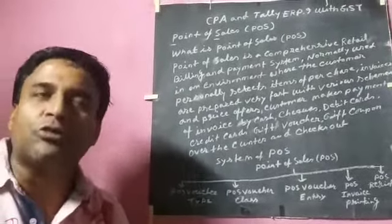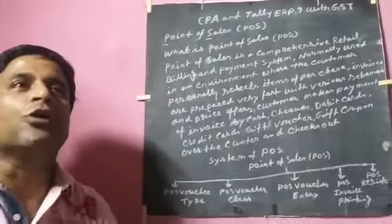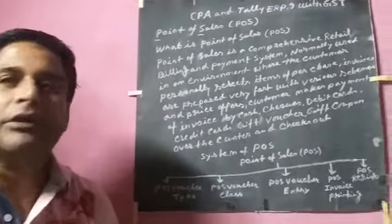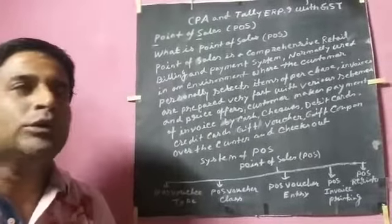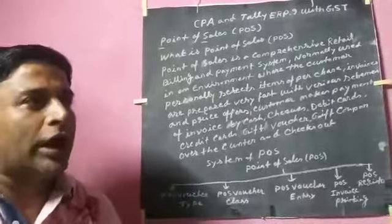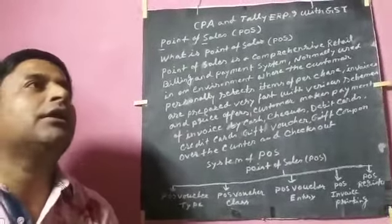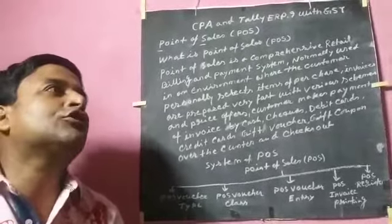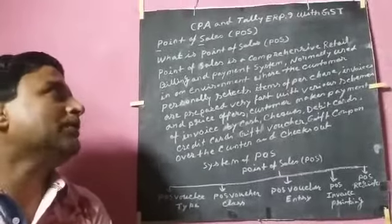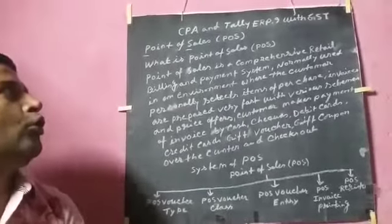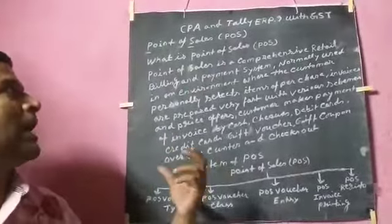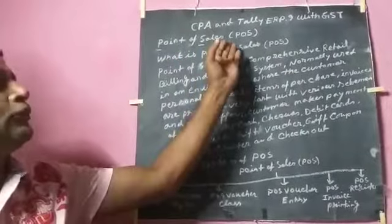We have already seen sales vouchers, sales order, sales challan, delivery note, and sales bill with credit notes, sales return, and rejection in. So we have seen all of these points leading up to Point of Sales.